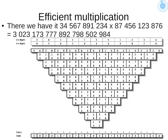And that's the answer. There I have my answer: 3, 0, 2, 3, 1, 7, 3, 7, 7, 7, 8, 9, 2, 7, 9, 8, 5, 0, 2, 9, 8, 4. A huge number that I could calculate by constructing this pyramid, and just doing single digit multiplications and mostly single digit additions.